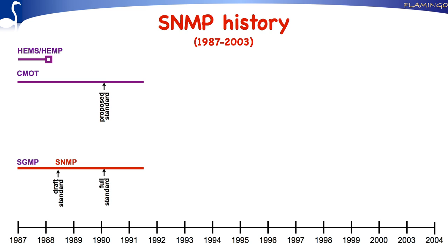SNMP became immediately widely implemented and deployed. Since SNMP had several shortcomings, such as weak security and relatively poor performance when large amounts of management data needed to be retrieved, people started to work on improving SNMP. For that purpose, two groups were established. The first one focused on security — SNMP had a very weak form of security with passwords, called community strings, flowing unencrypted over the network. The second group focused on other aspects such as performance. After some time, the SNMP security and the SNMP groups were merged into the SNMP version 2 group.